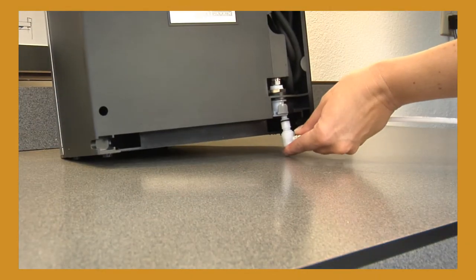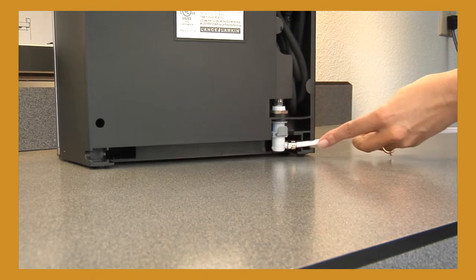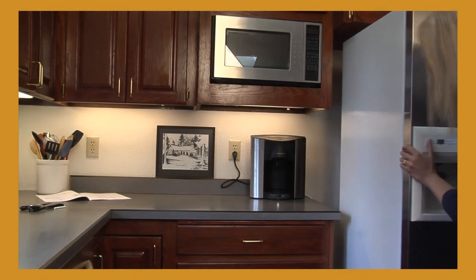Then simply snap the connector onto the mating connector at the rear of the brewer. You're ready to go, just turn it around and place it where you want it.